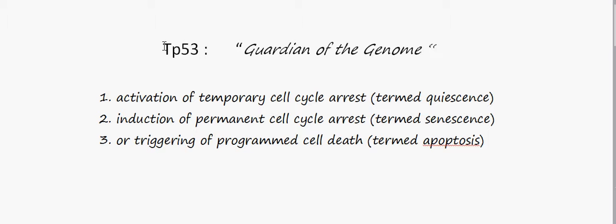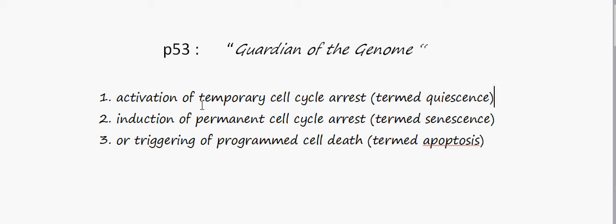This gene is of specific importance as more than 70 percent of cancers have a defect in the p53 gene. The p53 gene has three mechanisms by which it can prevent the formation of cancer. The first mechanism is activation of temporary cell cycle arrest, termed quiescence. The second is induction of permanent cell cycle arrest, termed senescence. The third is by triggering apoptosis, that is programmed cell death.